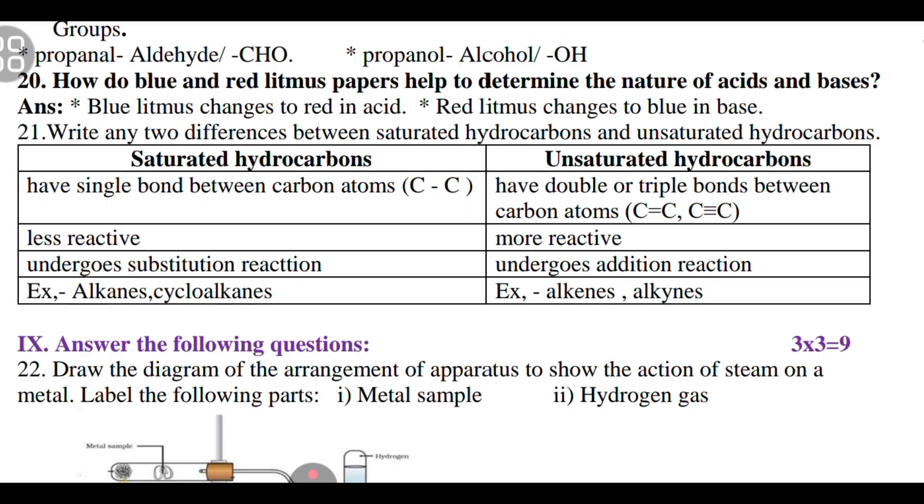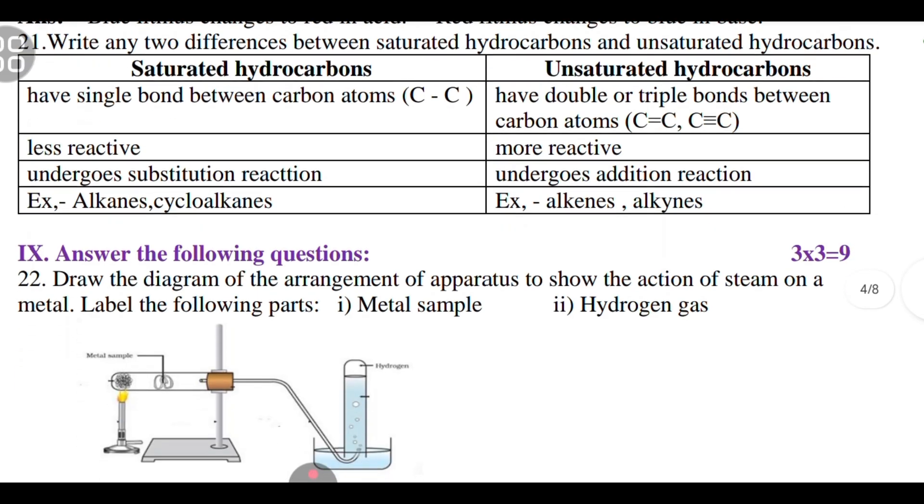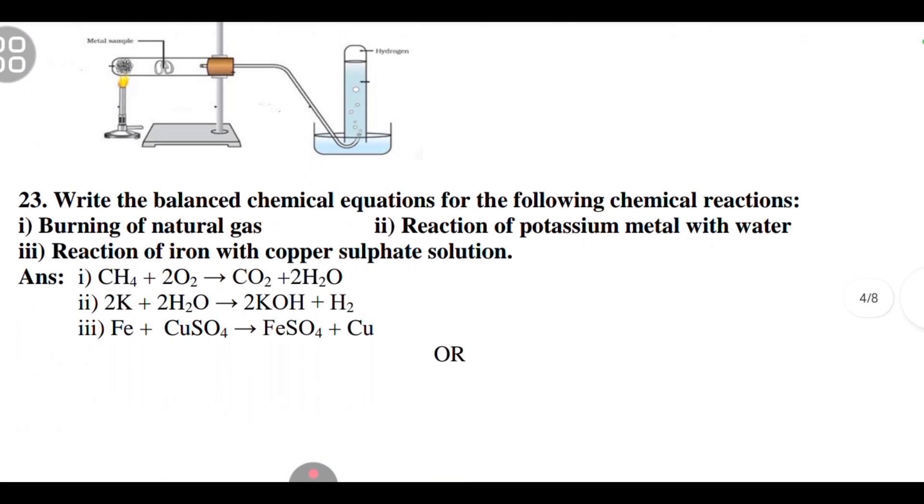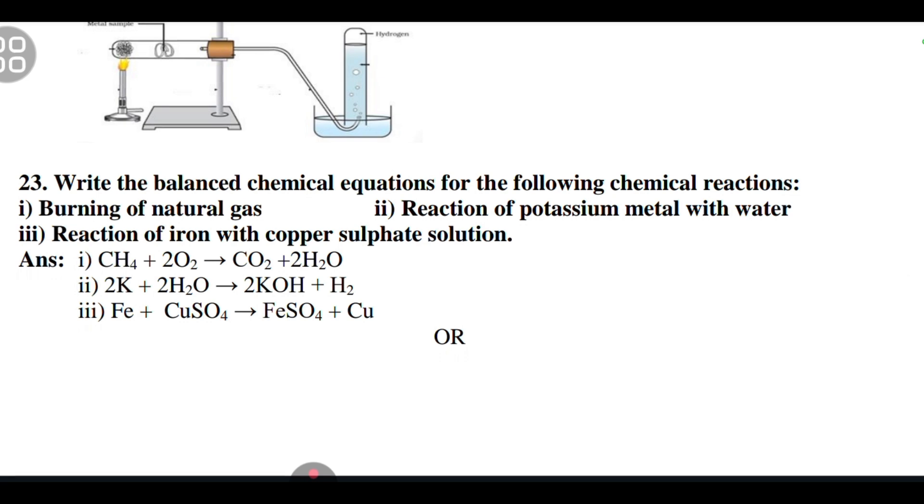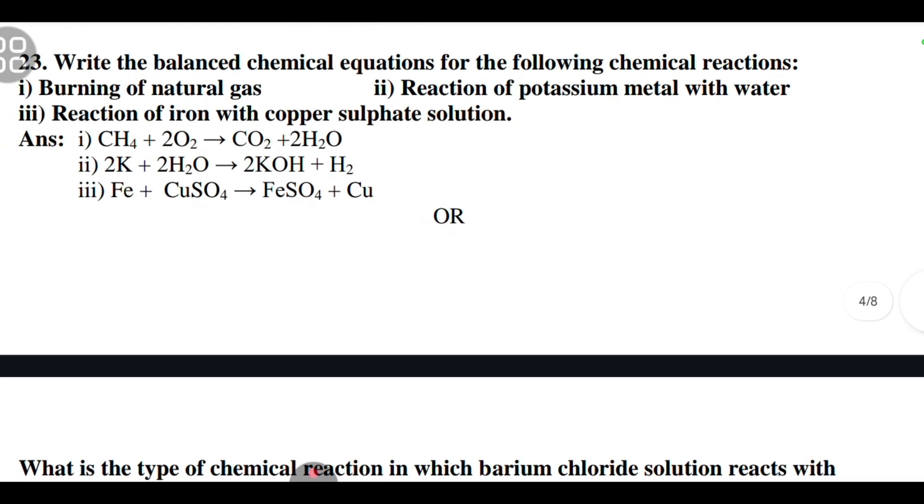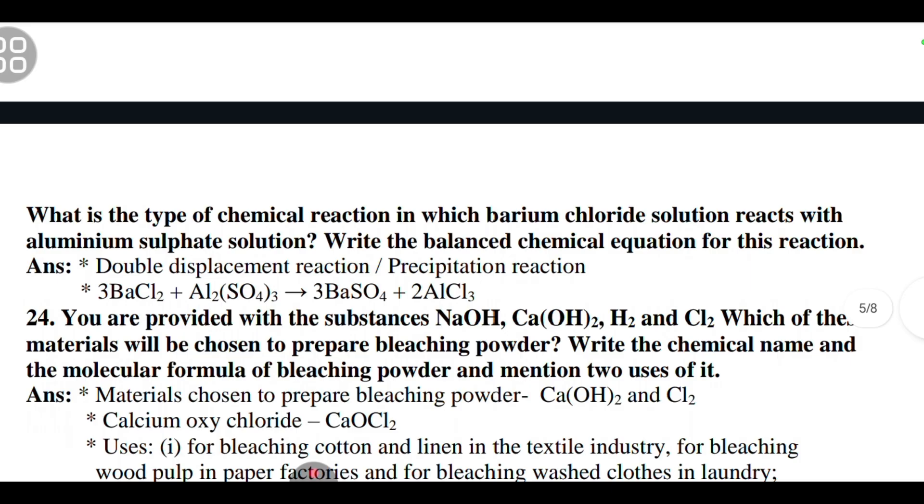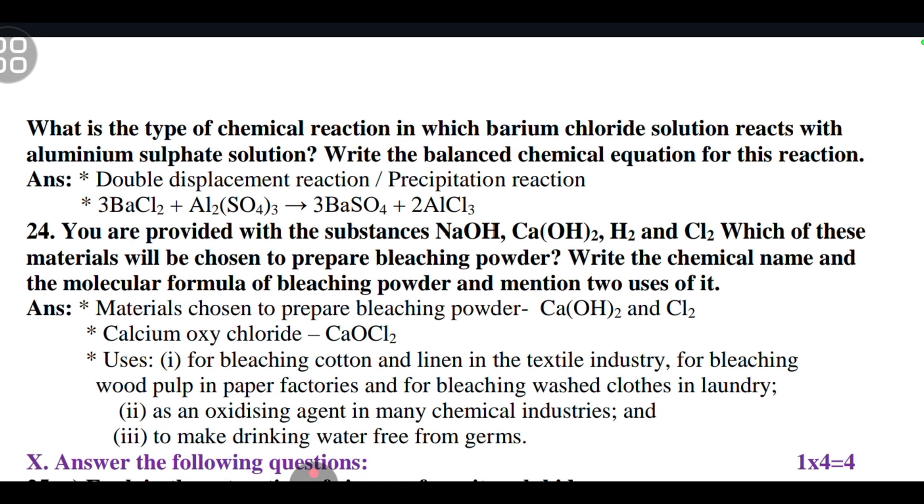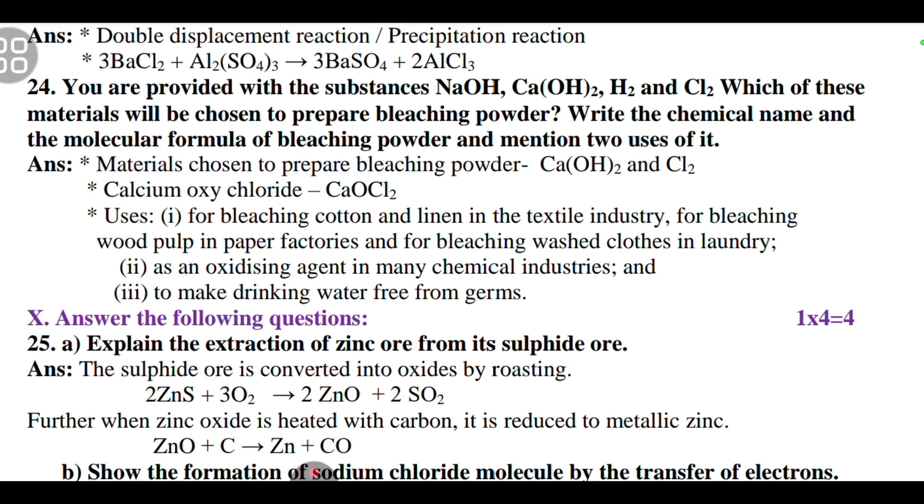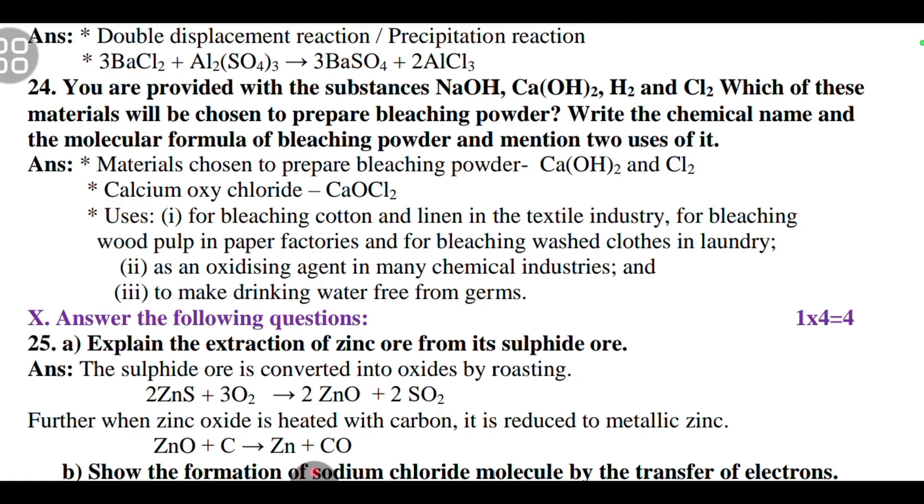Go through all the question papers. This is the first question paper. I will again upload the remaining three question papers. Prepare well for the examination. If you do these three, four question papers, you will nearly score at least 60 marks in your examination. 20th question: how do blue and red litmus papers help to determine the nature of acids and bases? Coming to the 21st question: write any two differences between saturated hydrocarbons and unsaturated hydrocarbons.